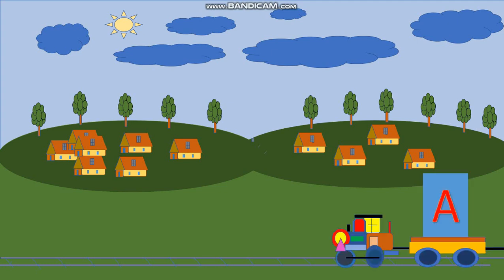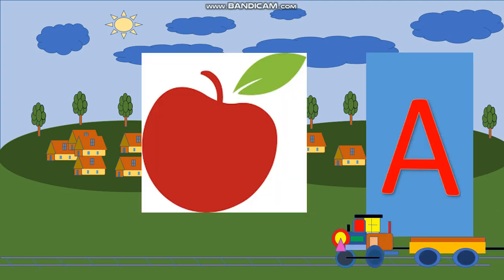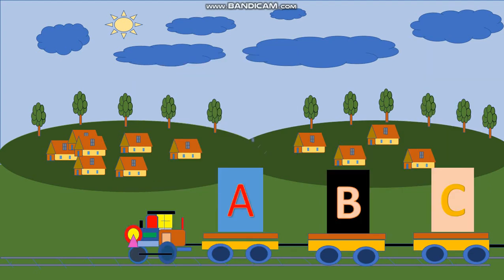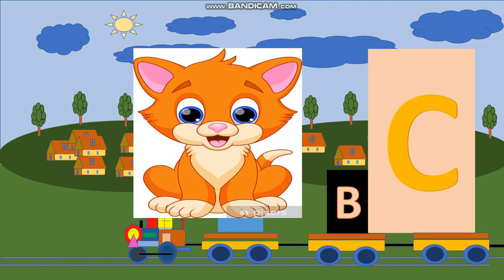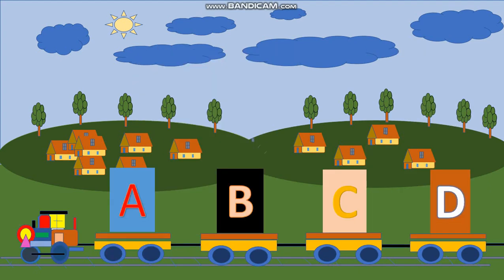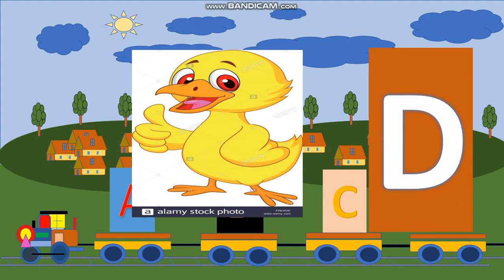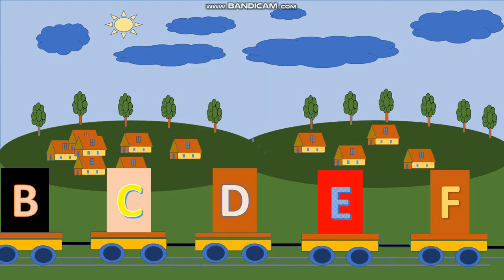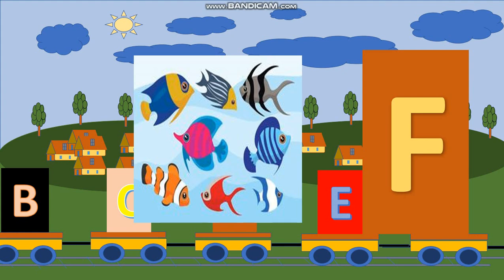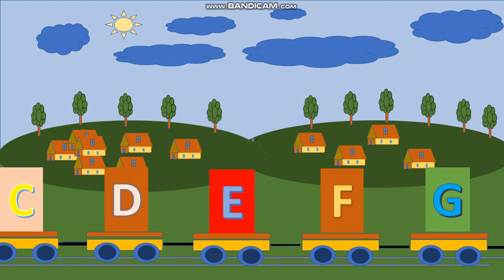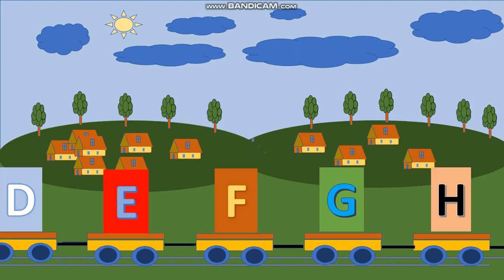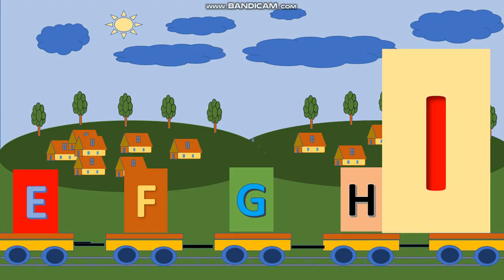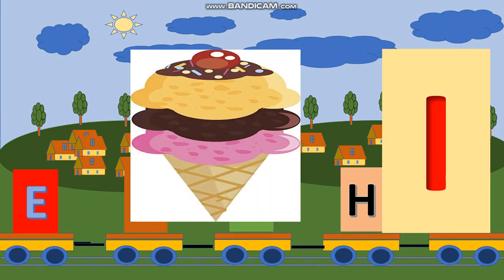Now let's try it a little faster. A, A, apple. B, B, ball. C, C, cat. D, D, duck. E, E, egg. F, F, fish. G, G, girl. H, H, hen. I, I, ice cream.